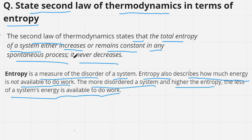So you can understand that entropy will either increase or remain constant but cannot decrease. We can basically disturb the order of the cards but cannot arrange the cards back in the same order, because it will require more energy and we cannot use the whole system energy to do work. That's why entropy will either increase or remain constant but will not decrease. It is easy to disturb a system but very difficult to make it stable, because it will require more energy.